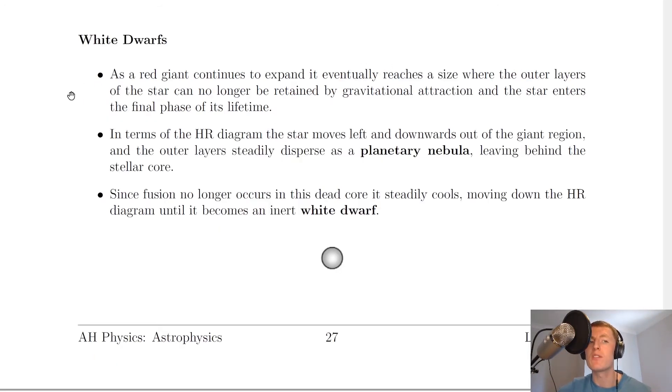Moving on, the next stage is white dwarf. As a red giant continues to expand, it eventually reaches a size where the outer layers of the star can no longer be retained by gravitational attraction and the star enters the final phase of its lifetime.